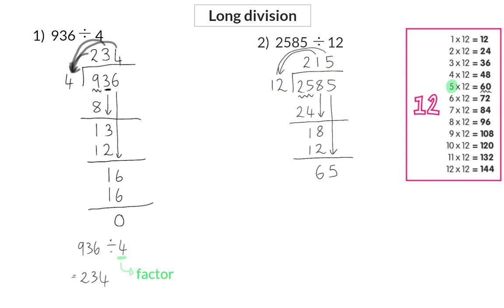5 times 12 is 60, and if I subtract, there will be a remainder of 5. 5 is smaller than 12, which means we are now done dividing, and we can say that 2585 divided by 12 is equal to 215 with a remainder of 5.